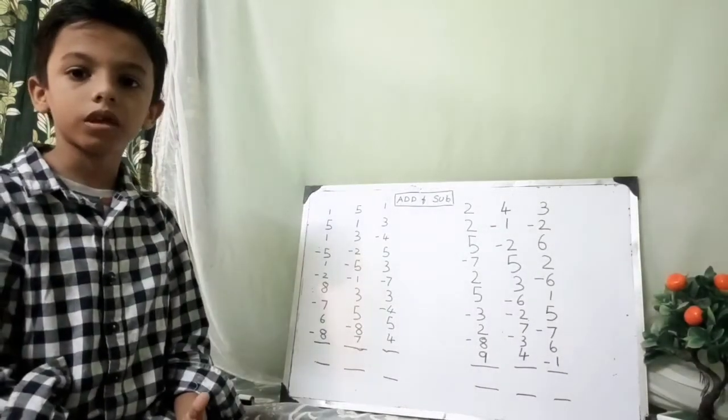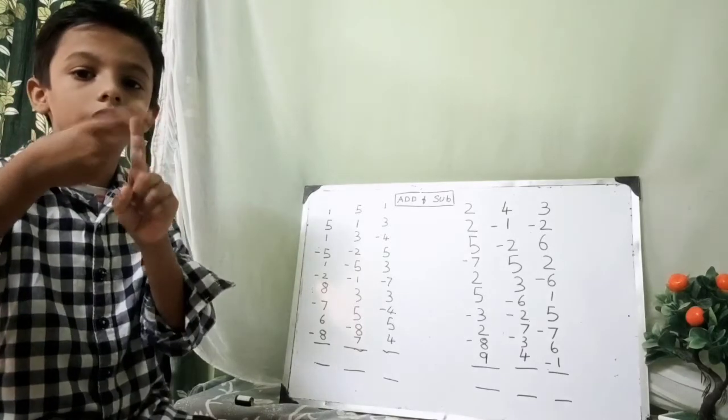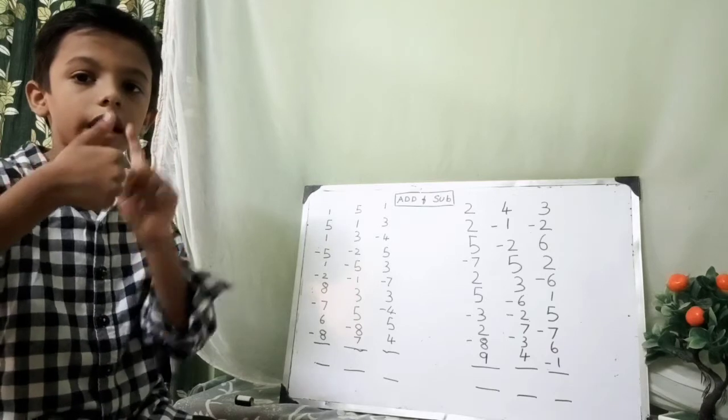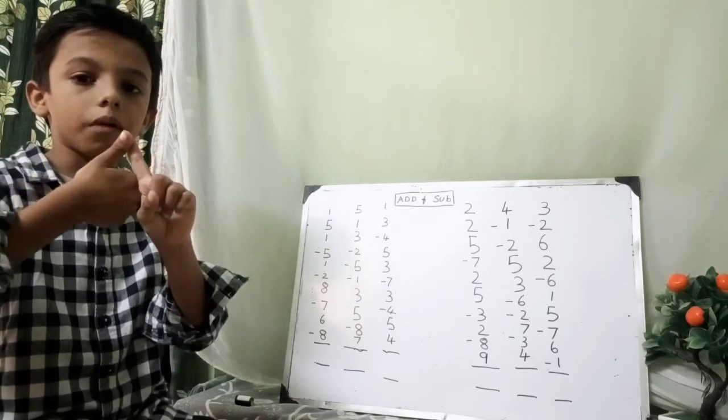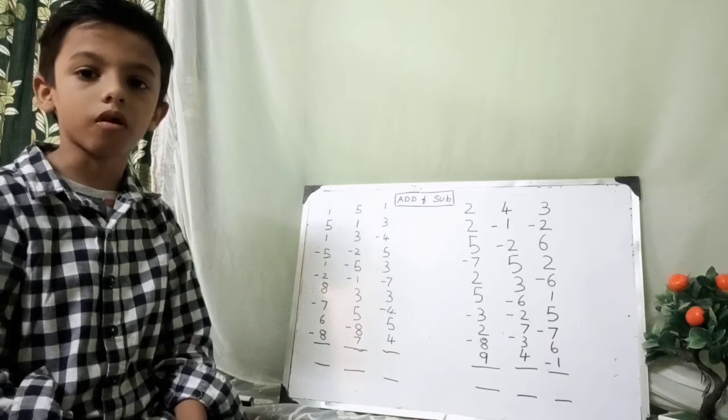Let me once again tell you how to do the fingers. This is one, two, three, four, and this finger represents the number five. Okay, now let's do the problem.